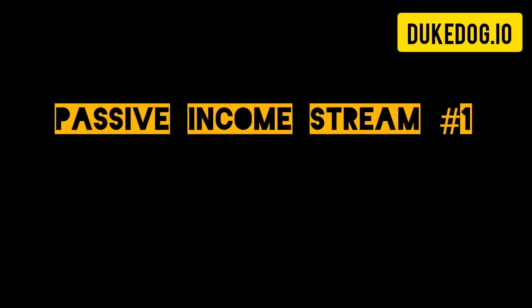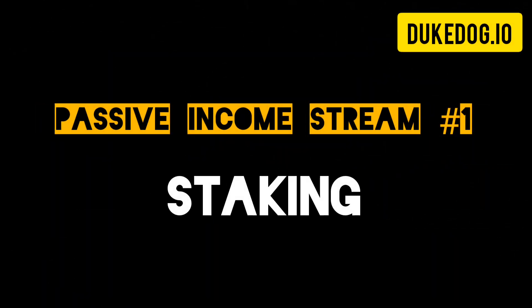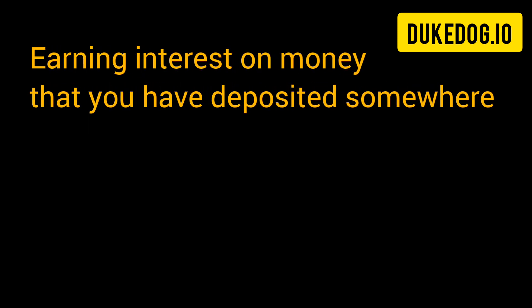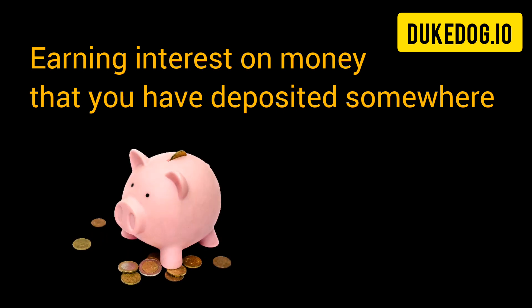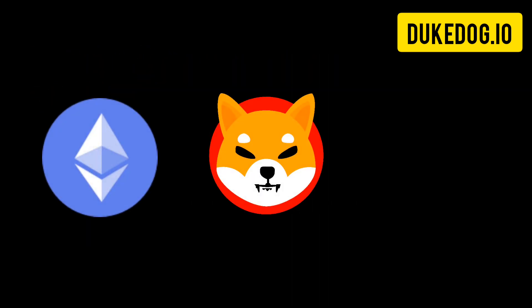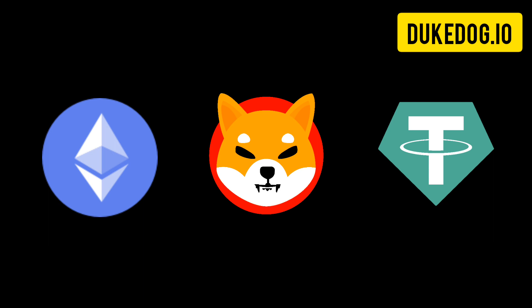Passive income stream one: staking. Staking is just a fancy term for depositing your money to earn interest. Think of it like having a savings account for a specific coin or token. You can stake Ethereum 2.0, you can stake Shiba Inu, you can even stake stable coins like USDT.